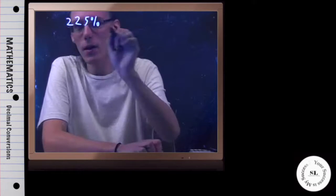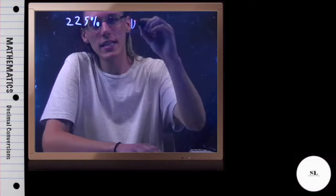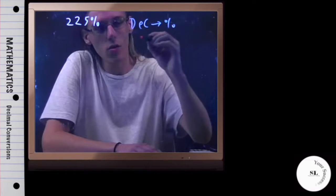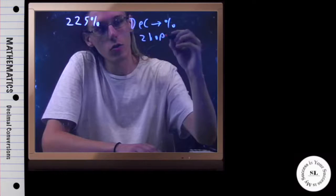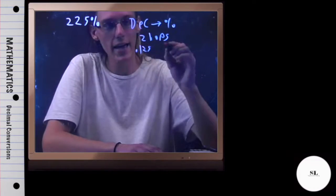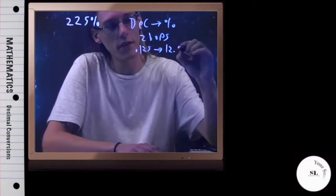Make sure you're careful about which direction you're going when you do these conversions, because if we're going from a decimal number to a percentage, that's always two hops to the right. For example, 0.125 as a percent, I'd hop over twice, and this would become 12.5%.